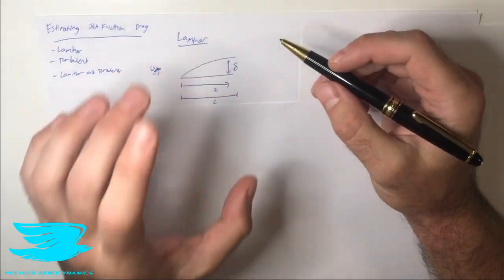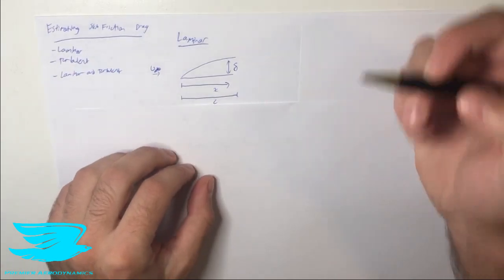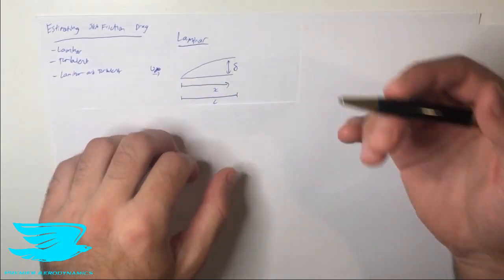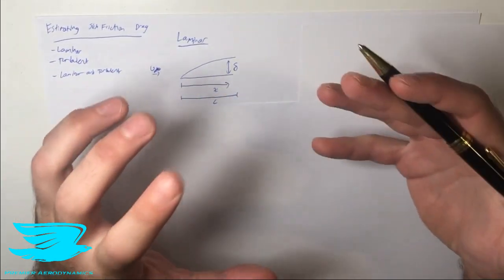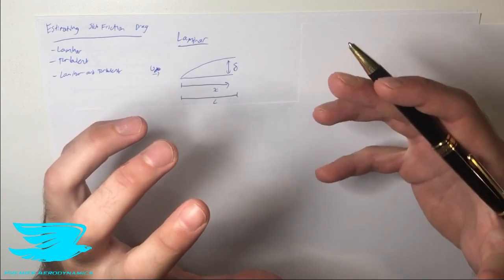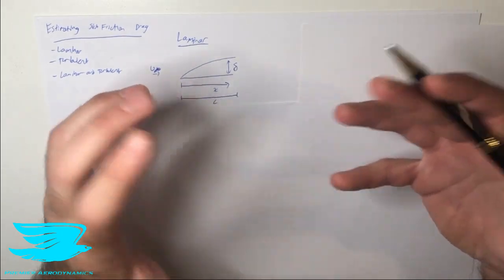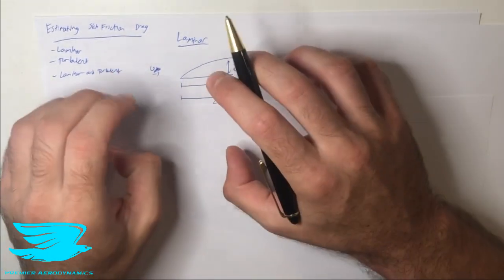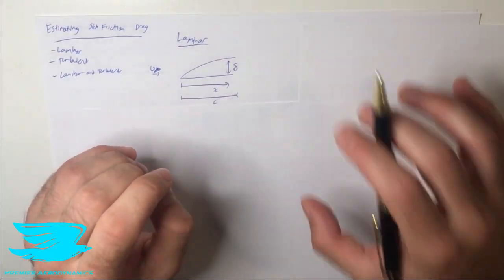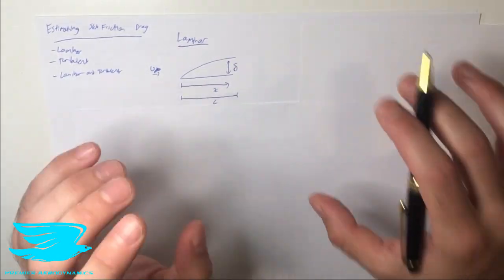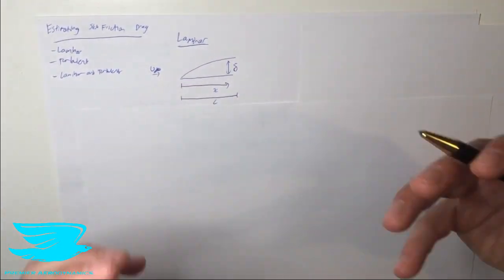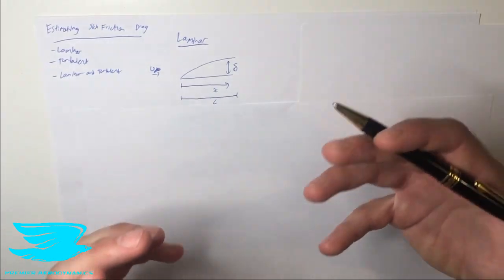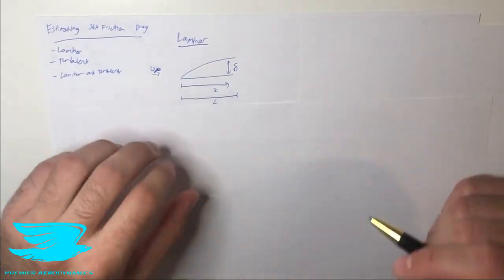First of all, we're going to be looking at a laminar boundary layer. We have a flat plate, and flat plates are pretty good approximations in terms of the flow over a lot of things, including an airfoil. So if you calculate the skin friction drag on a flat plate, that's pretty similar to what an airfoil experiences, which allows us to figure out an airfoil's skin friction drag quite easily.